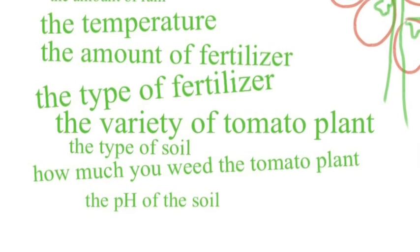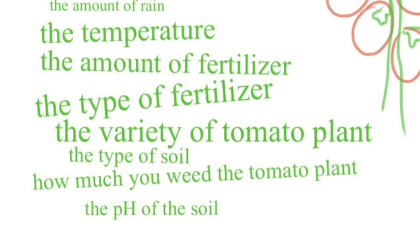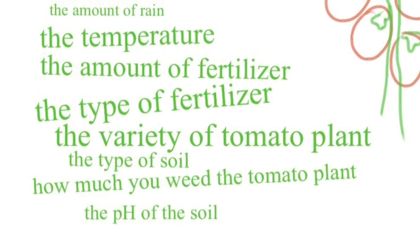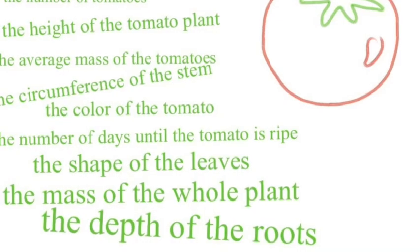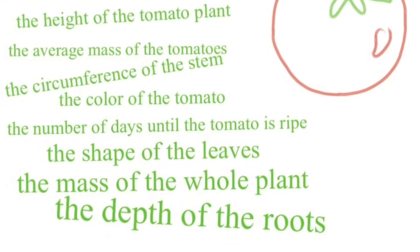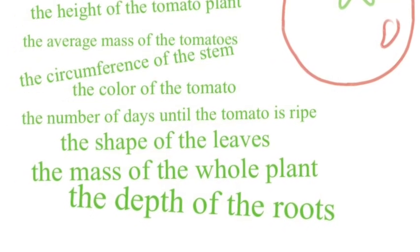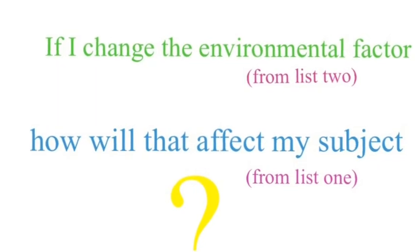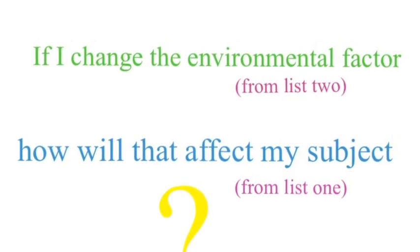So what do we do with these two lists? You take one thing from the environment list — it can be any of these — and you say, if I change the temperature, how does that affect something from the first list? If I change the temperature, how does that affect the number of days needed until the tomato's ripe? If I change the temperature, how does that affect the mass of the tomatoes? You see how that works? I took one thing from the second list and said, if I change that independent variable, how does that affect my dependent variable?